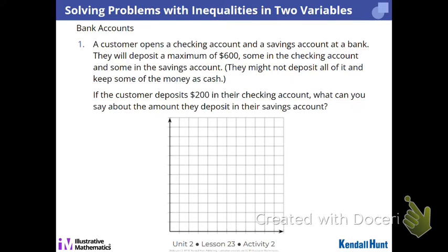The first situation is about bank accounts. Raise your hand if you have a checking or savings account. This is really a thing that happens at banks. Most people have checking and savings. I have both, but I only have $5 in savings — because the interest in checking is higher than the interest in savings. But in order to have a checking account, they require you to have a savings account. So I just have $5 sitting in there all the time.